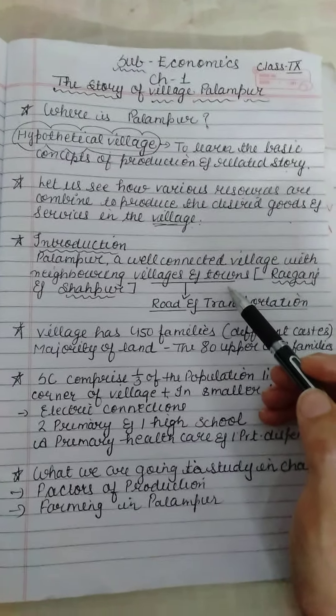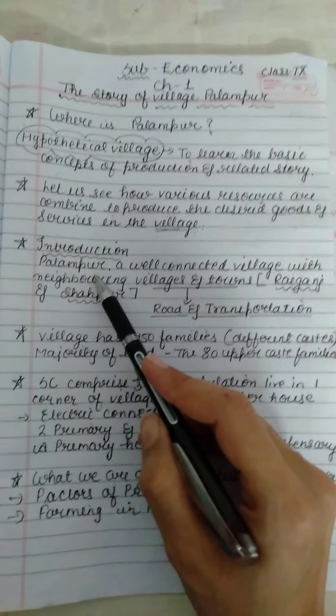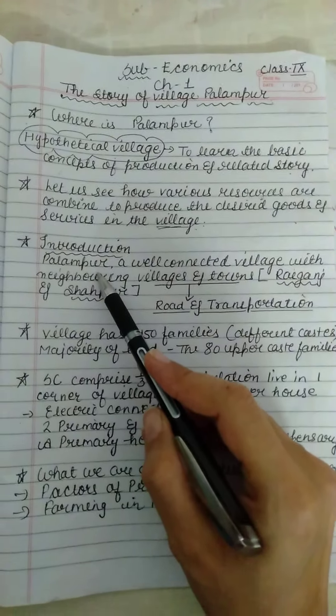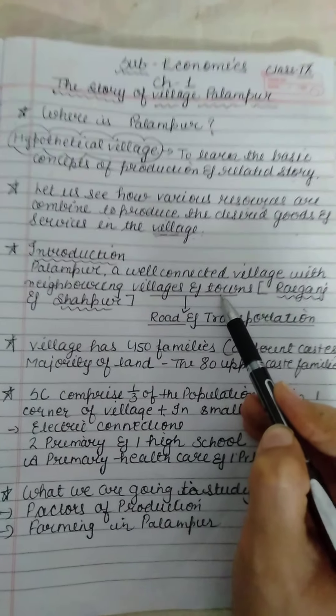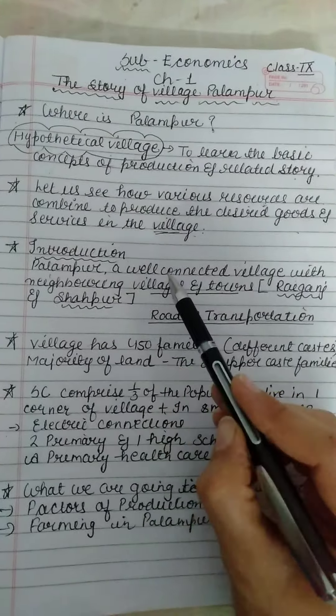Coming to the introduction about village Palampur — as I said, it is a hypothetical, imaginary village that does not exist anywhere. Palampur is a well-connected village with neighboring villages and towns. Being well-connected means road and transportation facilities are very good there, and there is no problem with transportation. The neighboring villages are Raiganj and Shahapur, and Palampur is very well connected with these villages and towns.